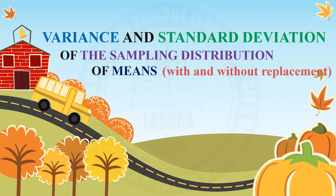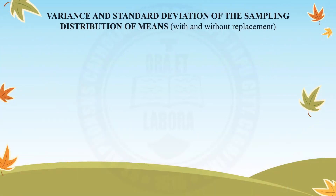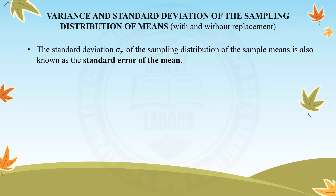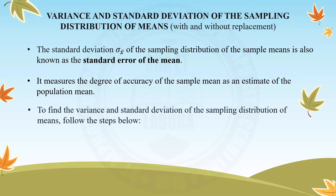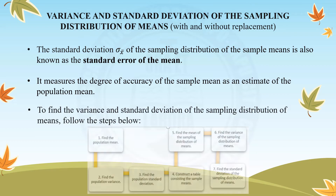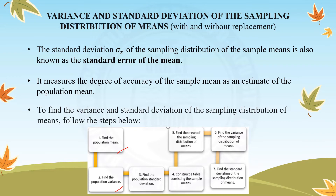Now we will discuss the variance and standard deviation of the sampling distribution of means, with and without replacement. Note that the standard deviation of the sampling distribution of sample means is also known as the standard error of the mean. It measures the degree of accuracy of the sample mean as an estimate of the population mean. To find the variance and standard deviation, follow these steps: first, find the population mean; second, find the population variance; third, find the population standard deviation.